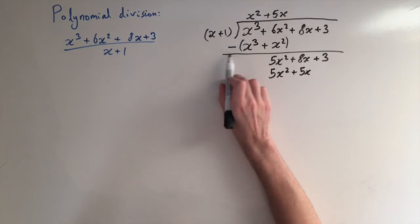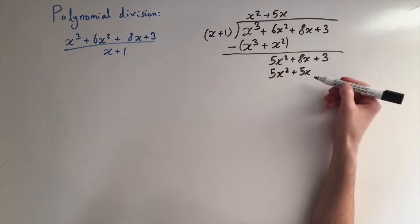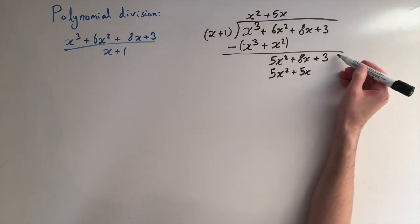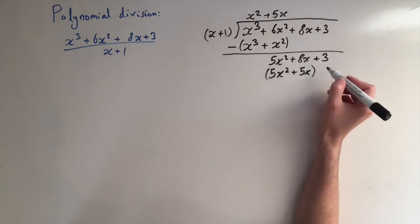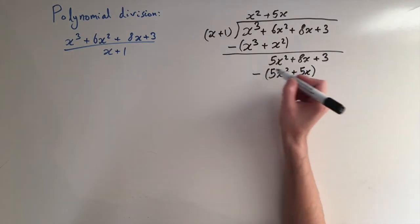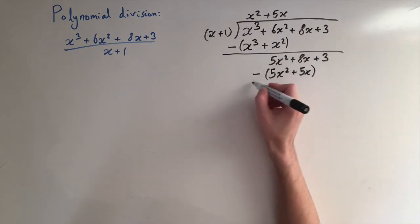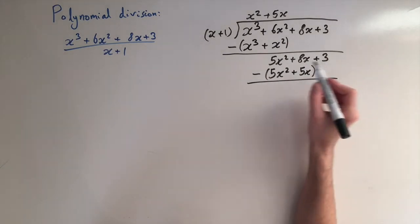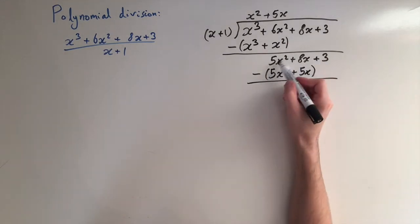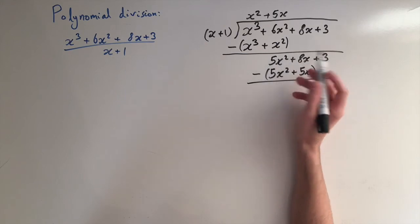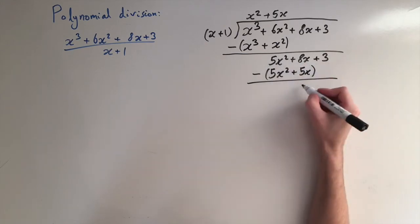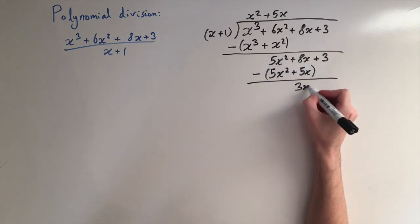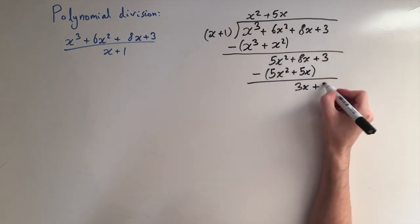We need to subtract this from our previous line — put brackets here with a minus sign and perform the subtraction. Again the leading terms cancel: the 5x squared terms cancel and we're left with 3x plus 3.